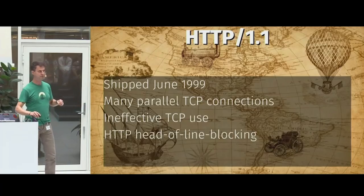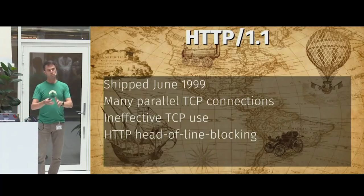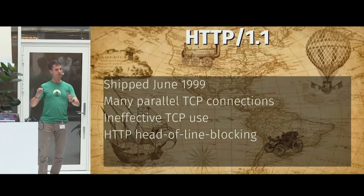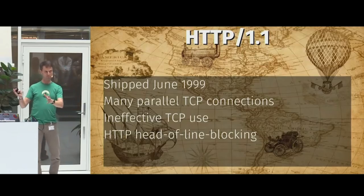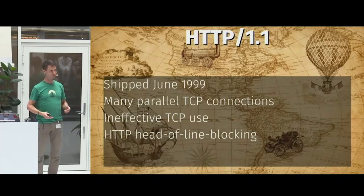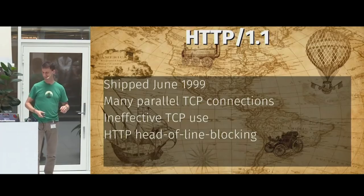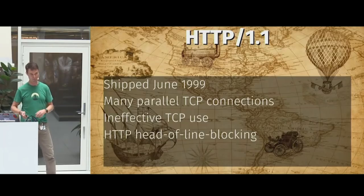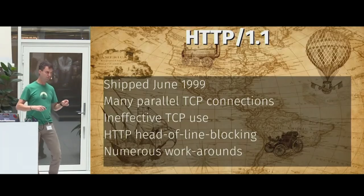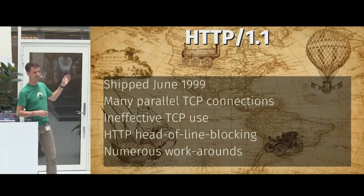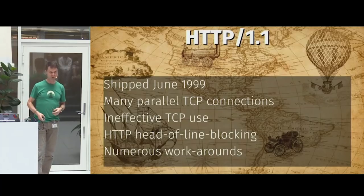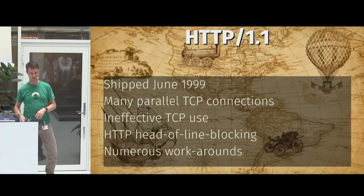Then there's HTTP head-of-line blocking. With this ping-pong problem and typically six connections per hostname, if you want 200 images from a website across six connections, it's like picking the wrong checkout line in a supermarket — difficult to choose which is fastest. The web today is complicated because clever site owners invented workarounds to get around those shortcomings.